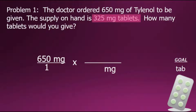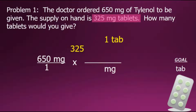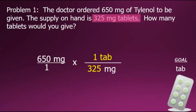The problem tells us that each tablet contains 325 milligrams of Tylenol. These two equivalent values, when expressed in a fractional form with one quantity in the numerator and one in the denominator, create a special 1. Multiplying by 1 doesn't change a value, but in this case it will allow us to convert from one unit to the other. In fraction multiplication, if we have a common factor in the numerator and the denominator, as is the case here with milligrams, they cancel out because their value is equal to 1.